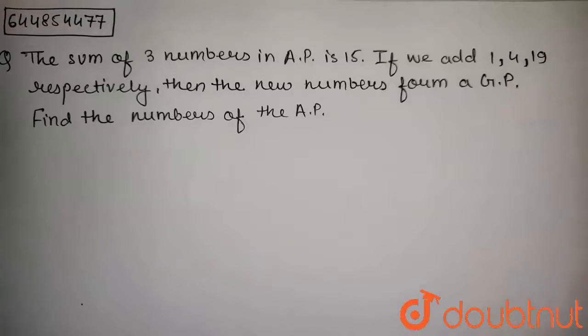The question is: the sum of three numbers in AP is 15. If we add 1, 4, 19 respectively, then the new numbers form a GP. Find the numbers of the AP.